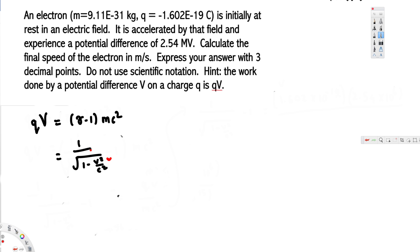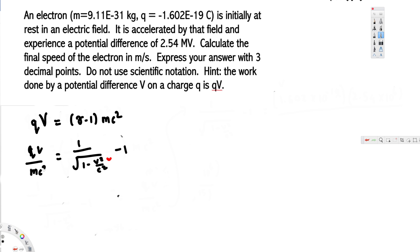Now let's rearrange. If we bring the mc squared to the other side, we get: 1 over the square root of 1 minus v squared over c squared, minus 1, is equal to qV divided by mc squared. Let's plug in the values.